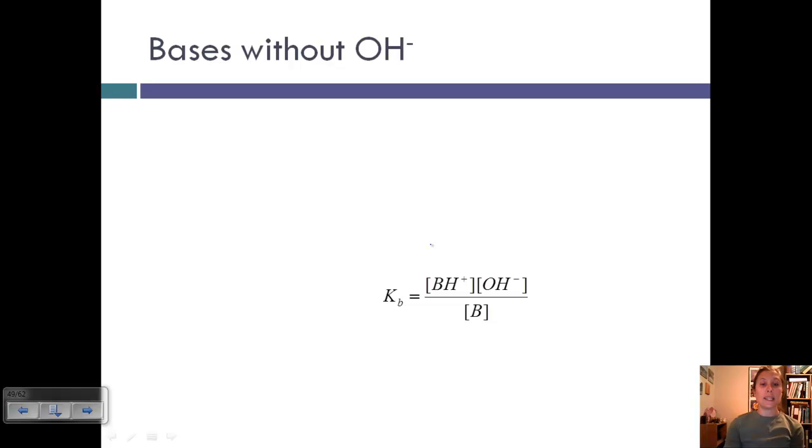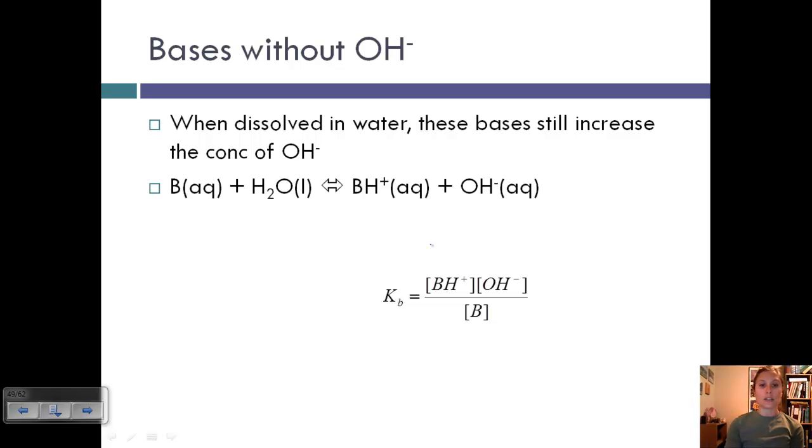Some bases don't contain an OH-. They wouldn't be considered an Arrhenius base, but they would be considered a Bronsted-Lowry. The way that these help increase the concentration of OH is that when they are dissolved in water, they still help increase that concentration. Here's the general form.